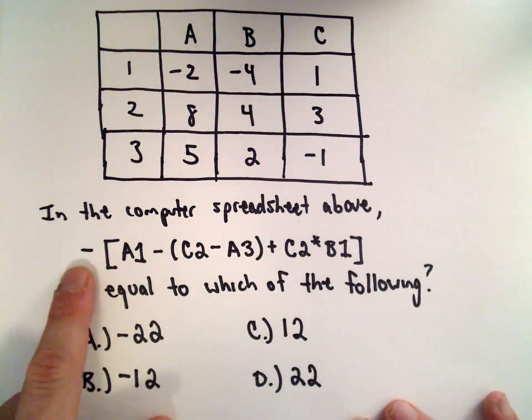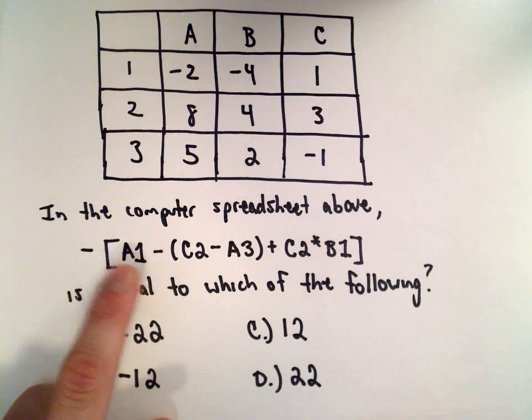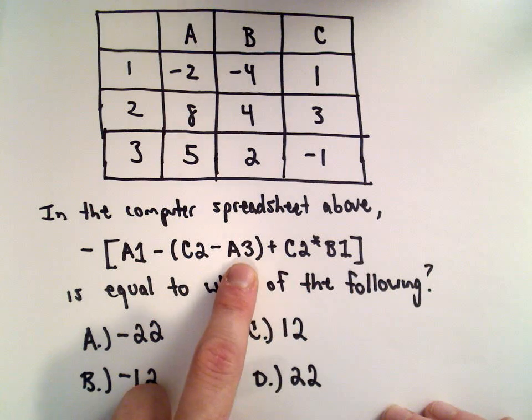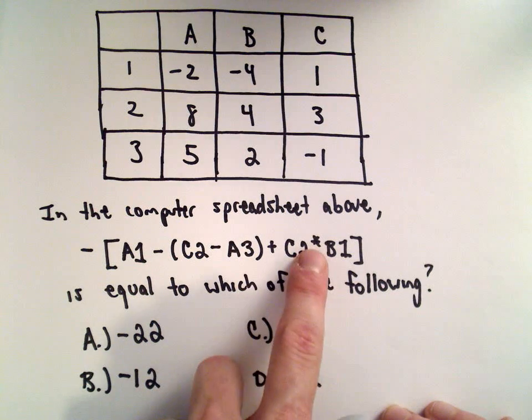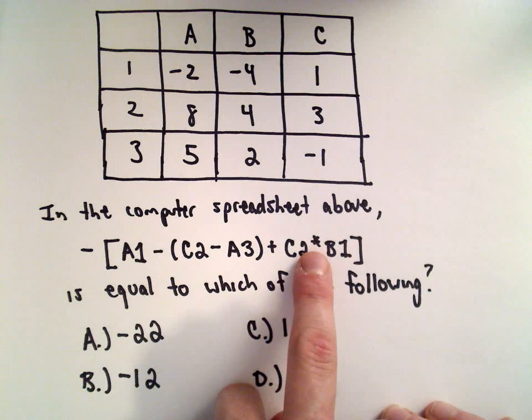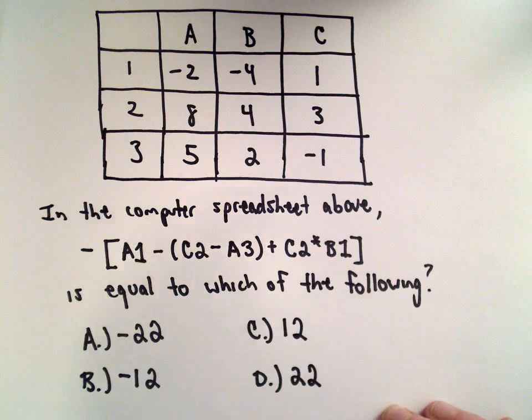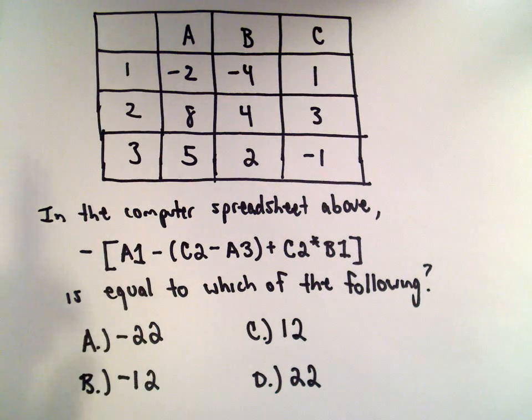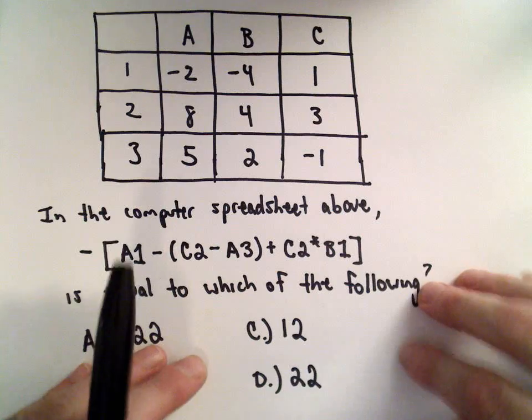And they want us to calculate negative of this quantity: A1 minus, in parentheses, C2 minus A3, plus C2—the little star means multiplication—so C2 multiplied by B1. We want to get one of these values. So all it is is just reading off the values from the table and then doing some arithmetic.